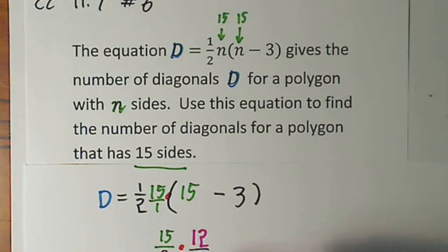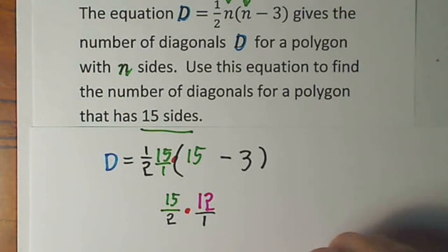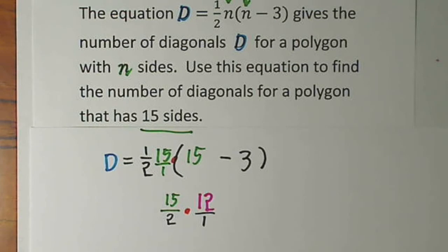I can just put my 12 over 1. Sorry about that, you can always put a number over 1, and we could reduce a little before we multiply.